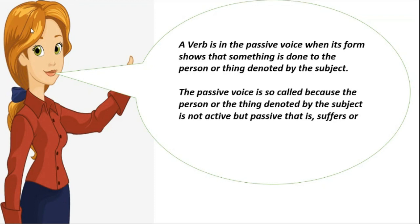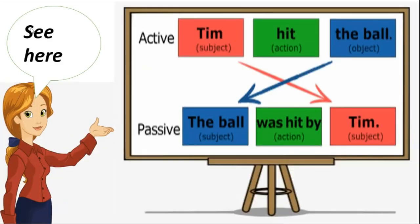The passive voice is so-called because the person or the thing denoted by the subject is not active but passive — that is, suffers or receives some action. See here. In active, the sentence will be 'Tim hit the ball,' where Tim is the subject, hit is the action and the ball is the object. And if we change it into passive, it will be 'The ball was hit by Tim.' Where the ball, which was the object in active, will be the subject in passive, and Tim, which was the subject in active, will come at last in the passive.